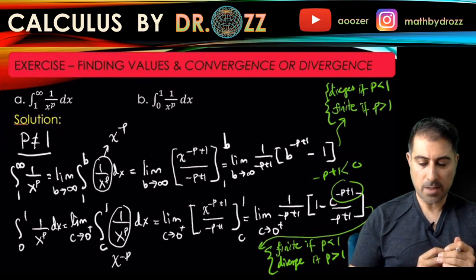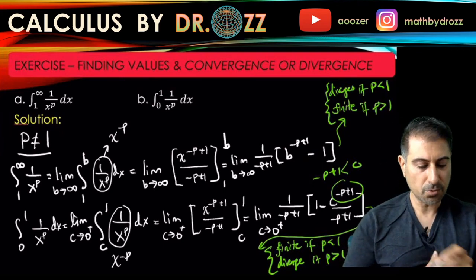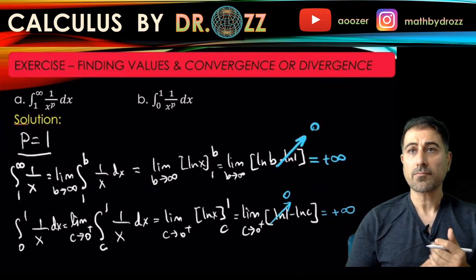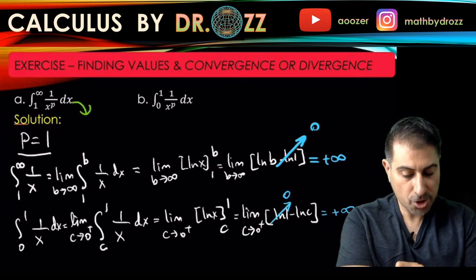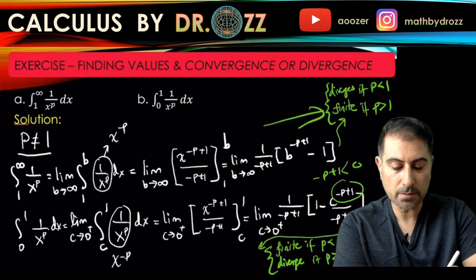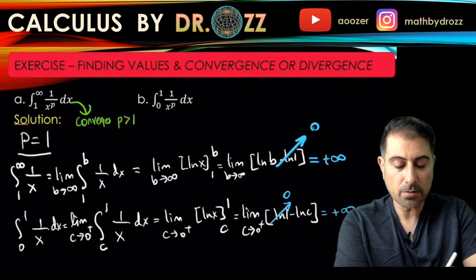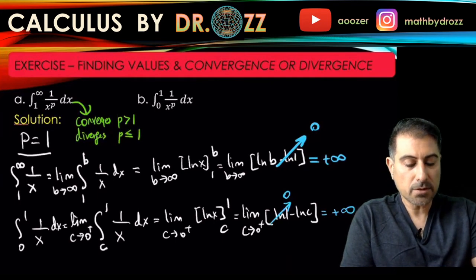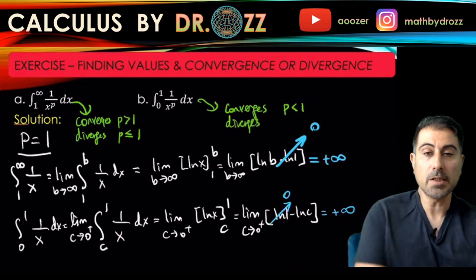To summarize: for p equals 1, both integrals diverge. The integral from 1 to infinity of 1 over x to the p dx converges only for p greater than 1, and diverges for p less than or equal to 1. The integral from 0 to 1 of 1 over x to the p dx converges for p less than 1, and diverges for p greater than or equal to 1.